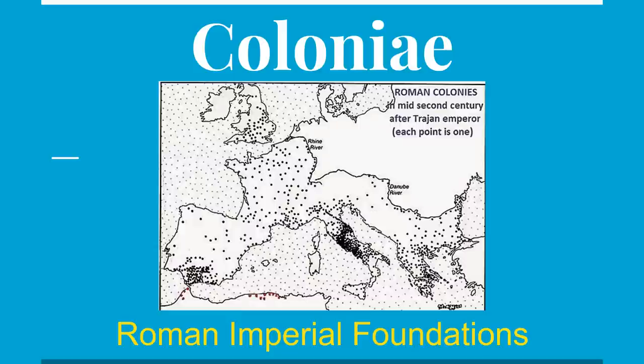This map gives you an indication through dots of where different Roman colonies were planted. A huge number of them were in Italy, and that is no accident. We'll start by looking at the role that cities play in governing the Roman Empire, then talk about how colonies function, and then transition to look at specific colonies around the Roman world and what they were like.